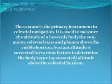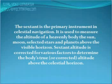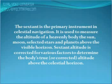The sextant is the primary instrument in celestial navigation. It is used to measure the altitude of a heavenly body — the Sun, Moon, selected stars, and selected planets — above the visible horizon. Sextant altitude is corrected for various factors to determine the body's true altitude above the celestial horizon.